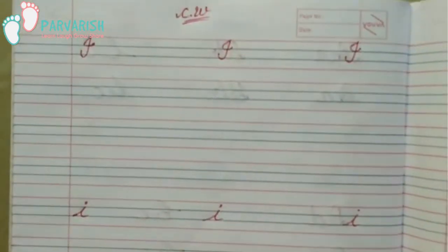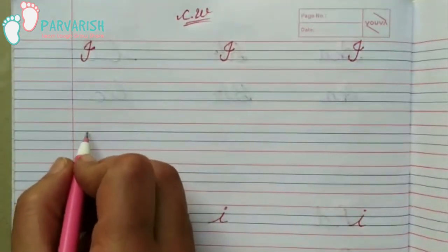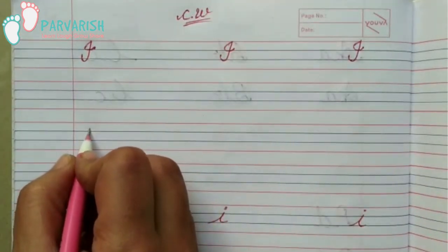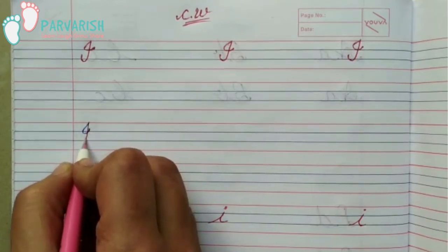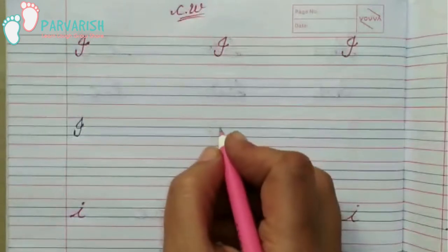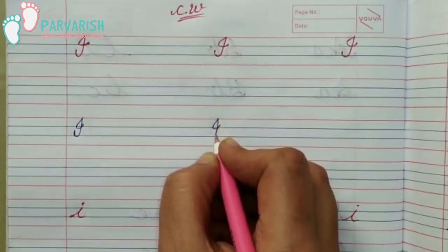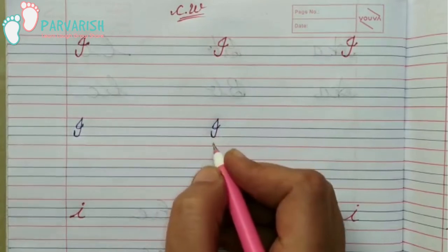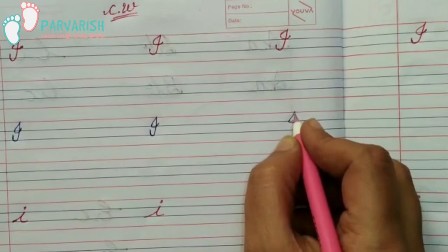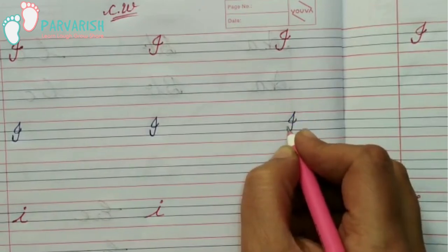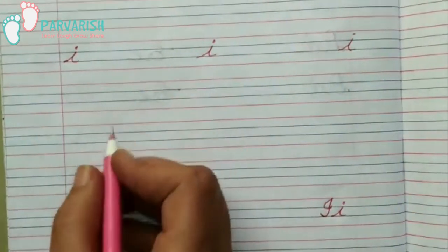First, we will try to make capital cursive I. We will put our pencil on the second line, take a small curve and go up, come down, and take a curve like this. Okay students — go up, down, and take a curve.